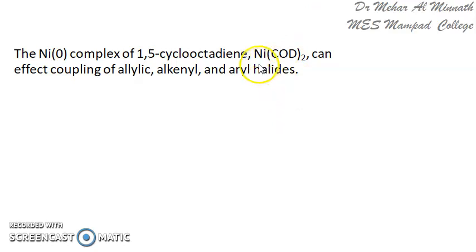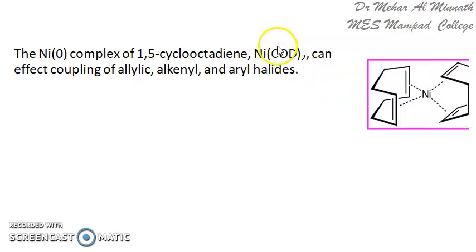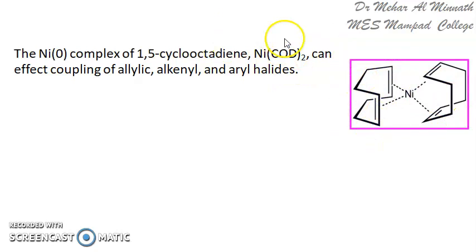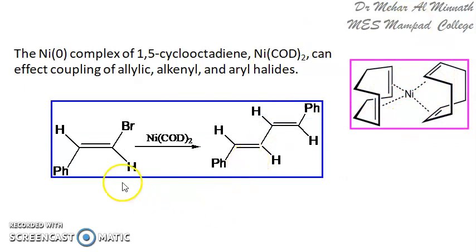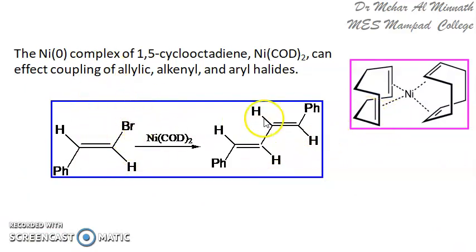Instead of nickel tetracarbonyl, we can use nickel 1,5-cyclooctadiene complex, Ni(COD)₂. We noted that nickel tetracarbonyl is toxic, while the nickel cyclooctadiene complex is less toxic. It is effective in coupling allylic, alkene, and aryl halides. Here you have an alkene; you treat it with the cyclooctadiene complex and get the coupled product — this is homocoupling, the same compound coupling itself, with the halide group removed. It is a trans-alkene starting material and you get a trans-product.